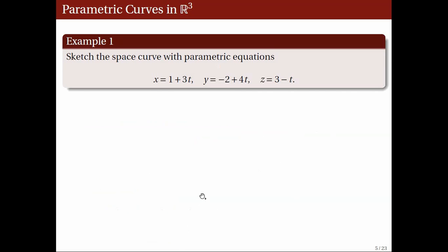Let's have an example. Consider the parametric equations x equals 1 plus 3t, y equals negative 2 plus 4t, and z equals 3 minus t. Since x, y, and z are all linear functions of t, then t may take on any real number. So let's substitute a few values. When t equals negative 1, we get x equals negative 2, y equals negative 6, and z equals 4. When t equals 0, we get x equals 1, y equals negative 2, and z equals 3.